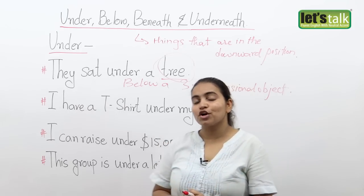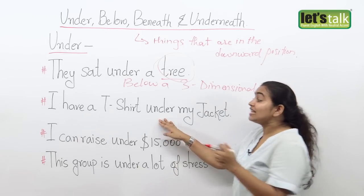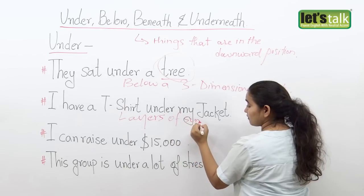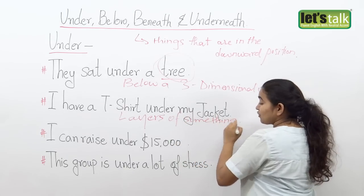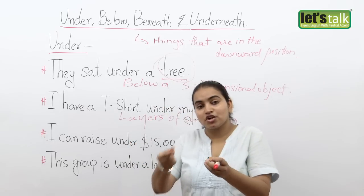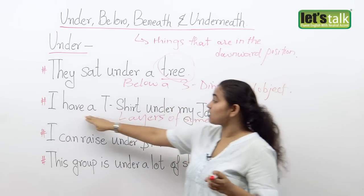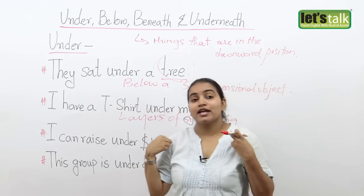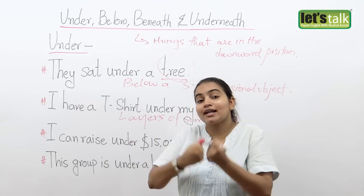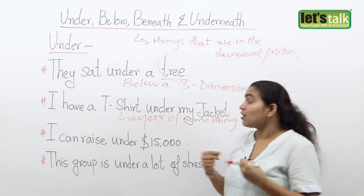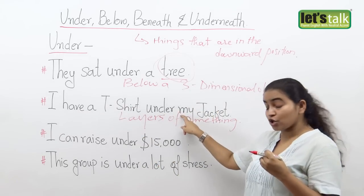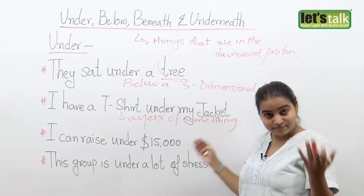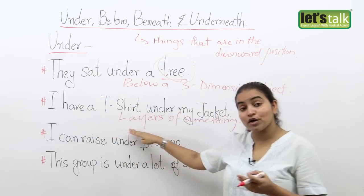I can also use the word under when I want to talk about layers of something. For example, I have a sentence like: I have a t-shirt under my jacket. So this is a shirt — now imagine if I was wearing a jacket on top of it. I could say that I have a shirt under my jacket because I am talking about layers of something. So we use under also when we are talking about layers.